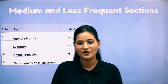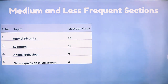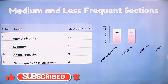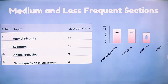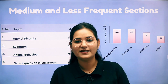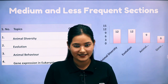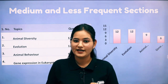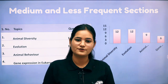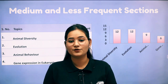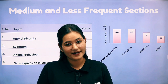The remaining four sections are: animal diversity with 12 questions, evolution with 12 questions, animal behavior with 9 questions, and gene expression in eukaryotes with 6 questions. So you can see that the seven priority sections should be your first target in the zoology subject, and then you can move to these four sections afterward.